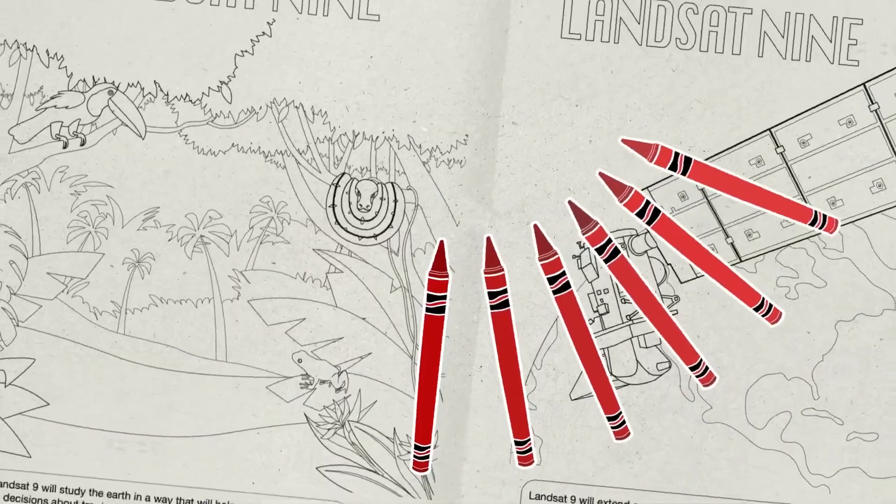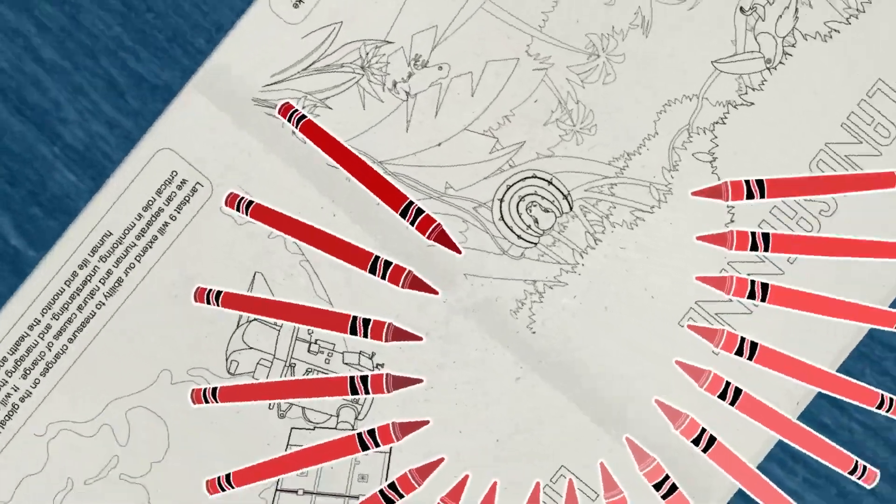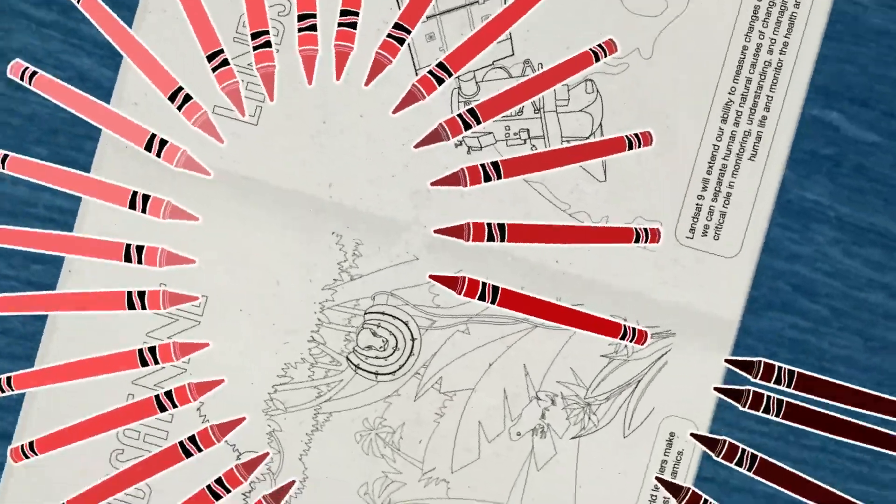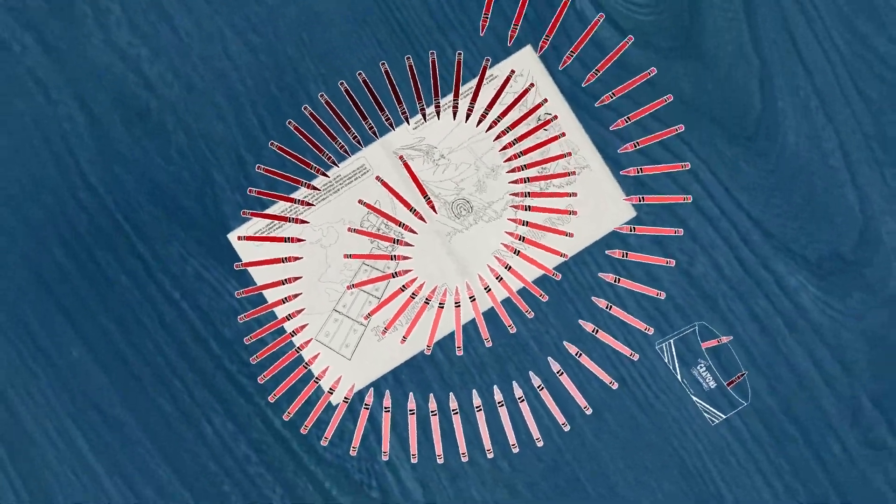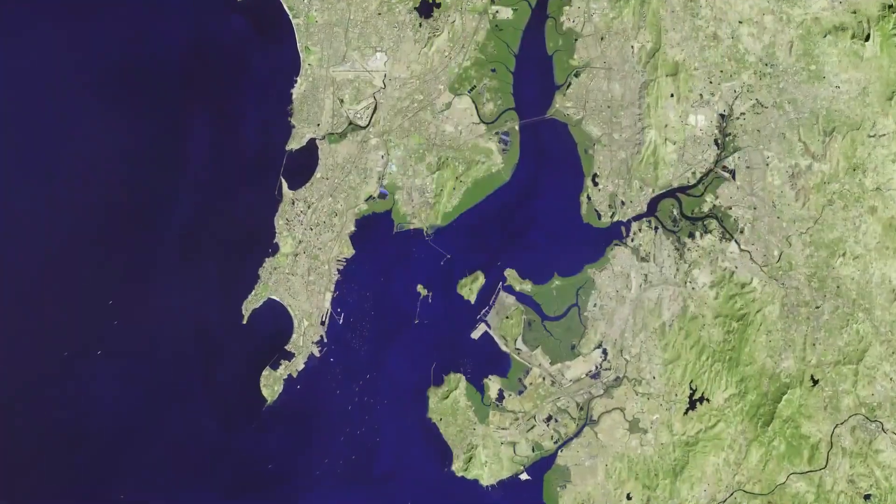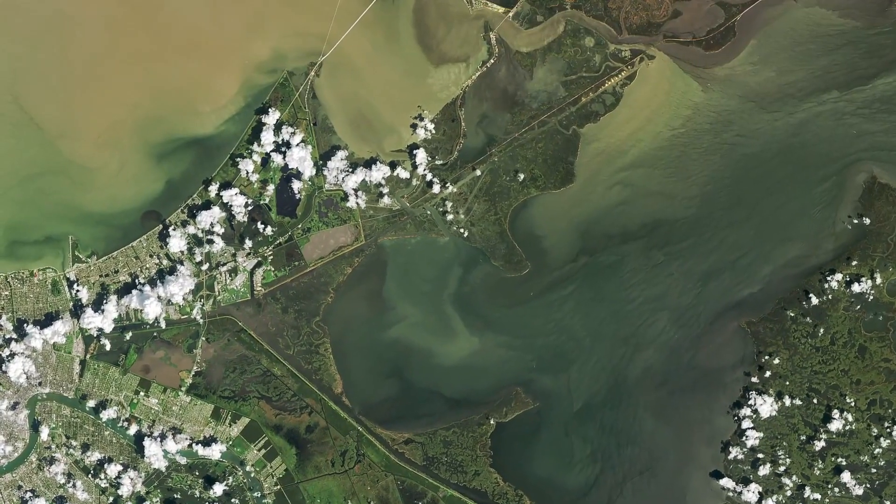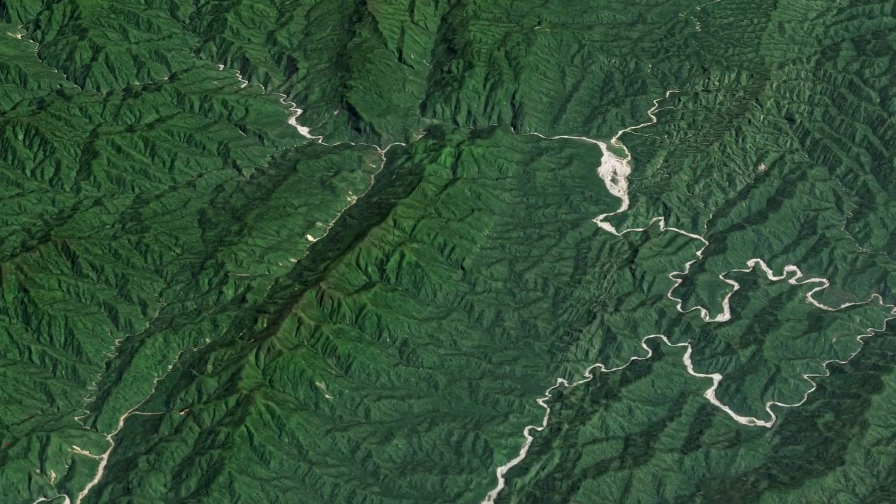Landsat 9, the newest satellite to join the Landsat fleet, sees 16,384 shades. That's four times the depth of color of the previous Landsat, meaning we'll be able to see more detail in darker spots like coastal waters and dense forests.